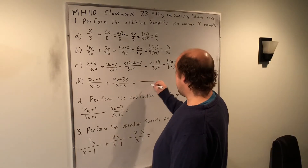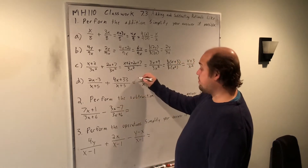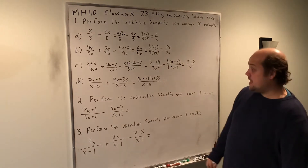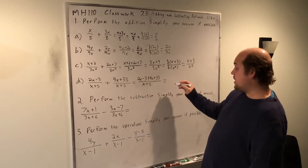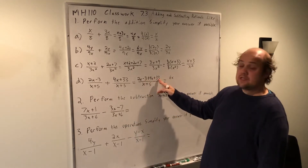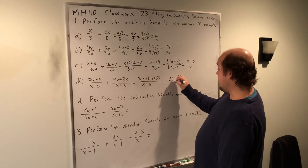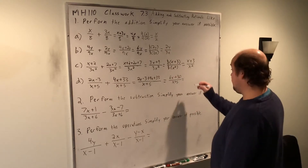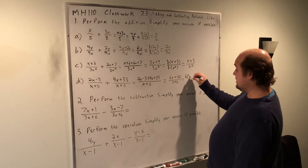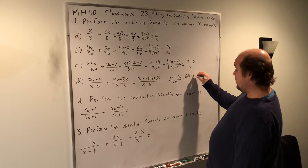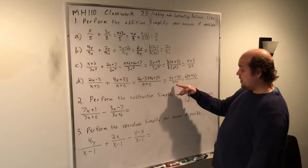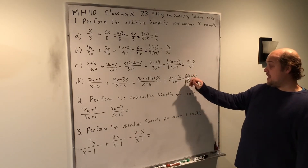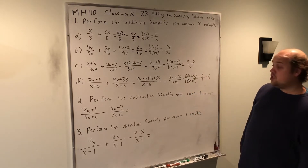In part D I'm going to start by writing the bottom X plus 5. Then I'm going to combine the tops: 2X minus 3 plus 4X plus 33. Combining like terms: 2X and 4X combine to give 6X, and negative 3 and positive 33 combine to give positive 30, still over X plus 5. Now I can see the top has a common factor of 6. When I factor out that 6, 6X divided by 6 leaves X, and 30 divided by 6 leaves positive 5. So this is really 6 times X plus 5 over X plus 5. Getting rid of that common factor X plus 5 leaves me with 6 over 1, or just 6 as my final answer.